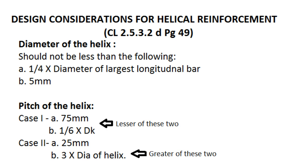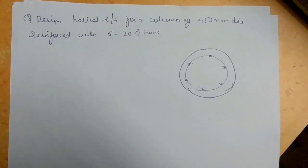For pitch, there are maximum and minimum conditions. For the maximum: the pitch should not exceed 75 mm, and should not exceed one-sixth of the core diameter (DK/6). For the minimum: the pitch should not be less than 25 mm, and should not be less than three times the diameter of the helical bar. By finding these two bounds, you get a range and select any value within that range as the pitch S.